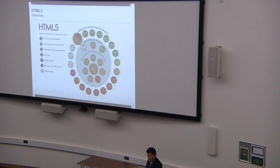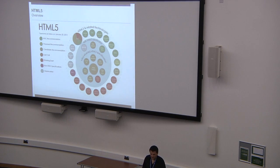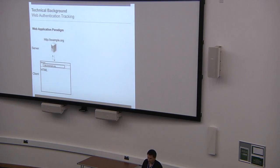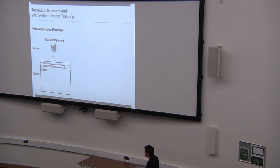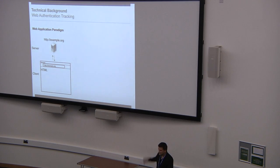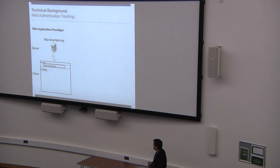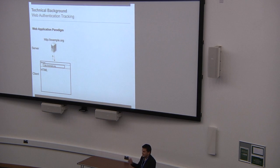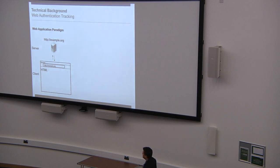Before we start with technical things, we need to introduce how security in web browsers works. The most basic thing to explain is the web application paradigm and how authentication works. In general, we have two entities: the client and the server. The server is a host on the internet with a domain name — here, example.org. The client is a browser. The user specifies a URL, presses enter, the browser sends an HTTP request, the server processes it, returns an HTTP response, and the browser renders HTML.